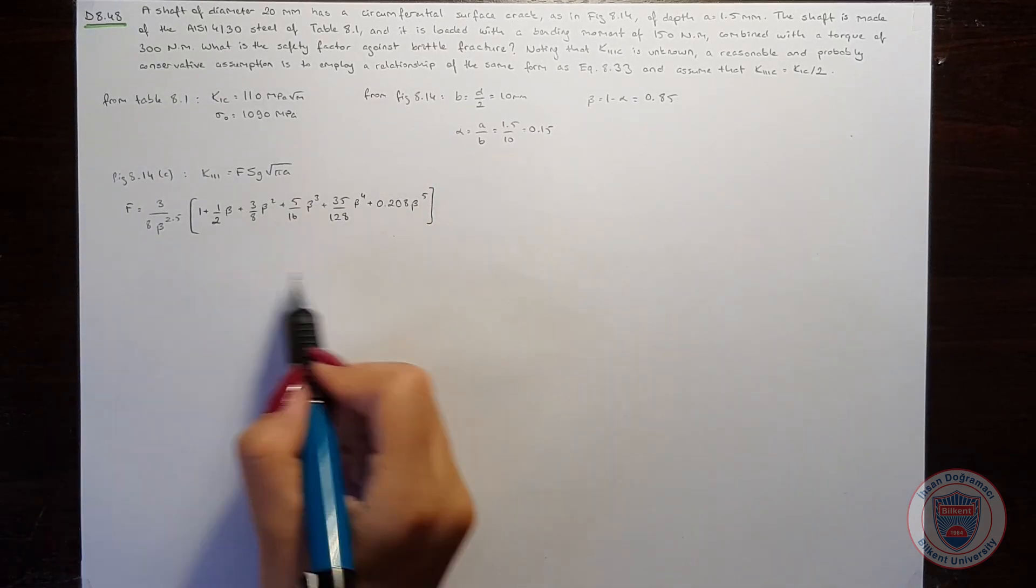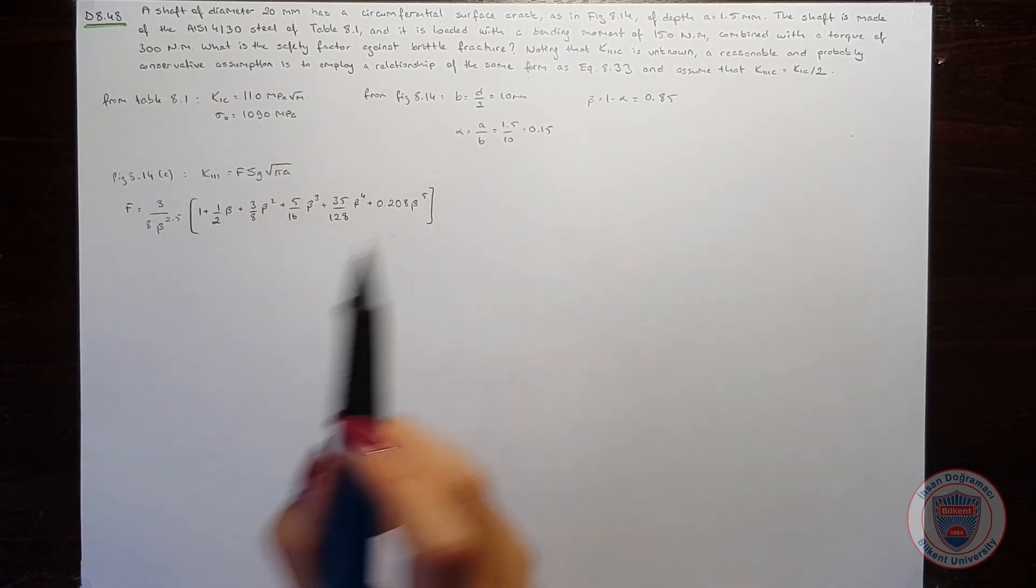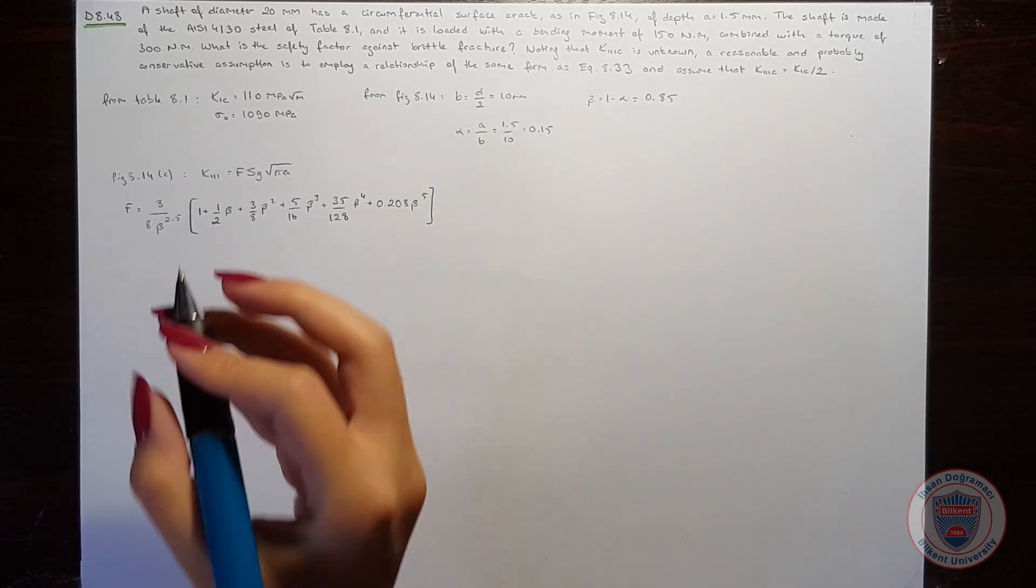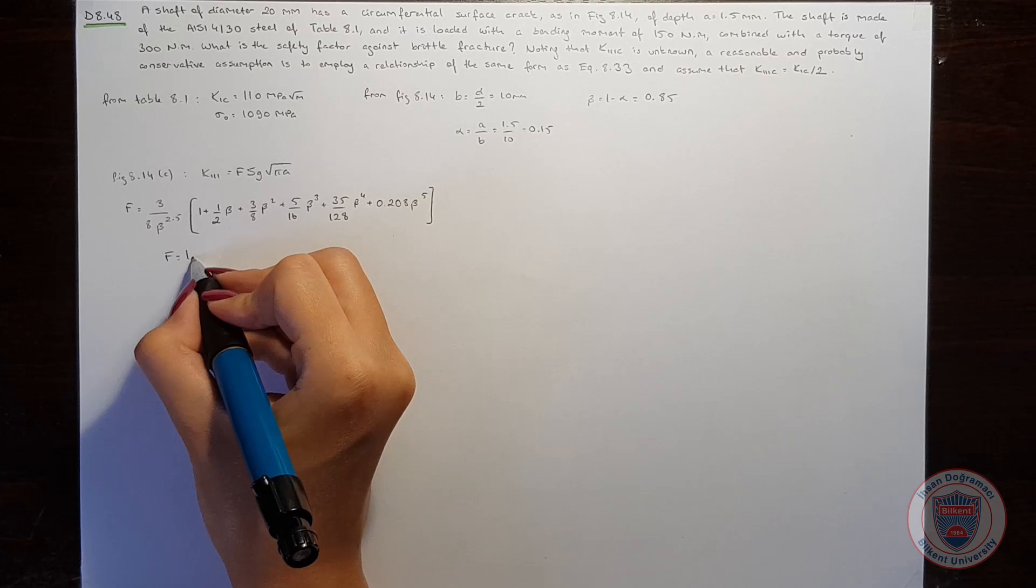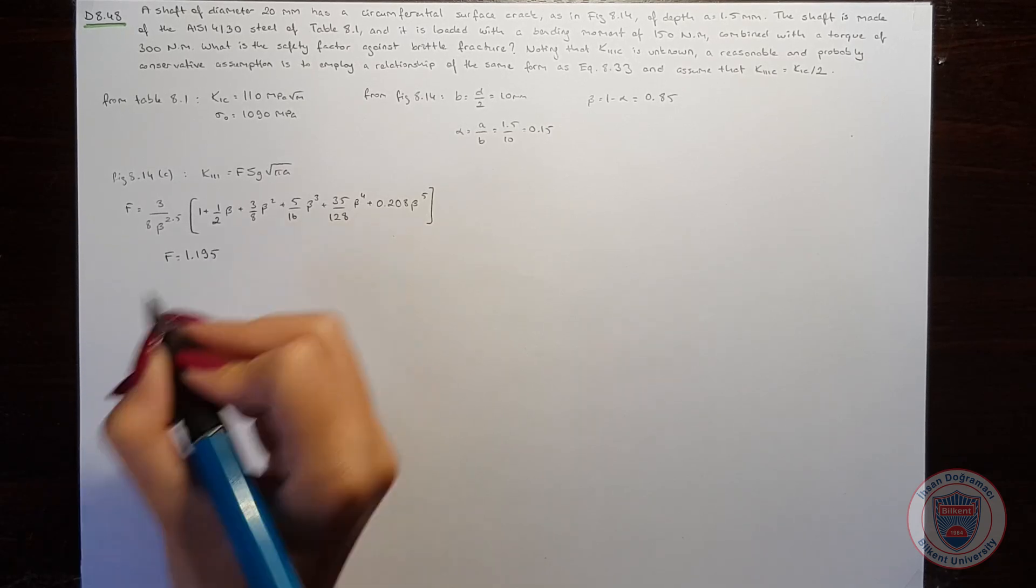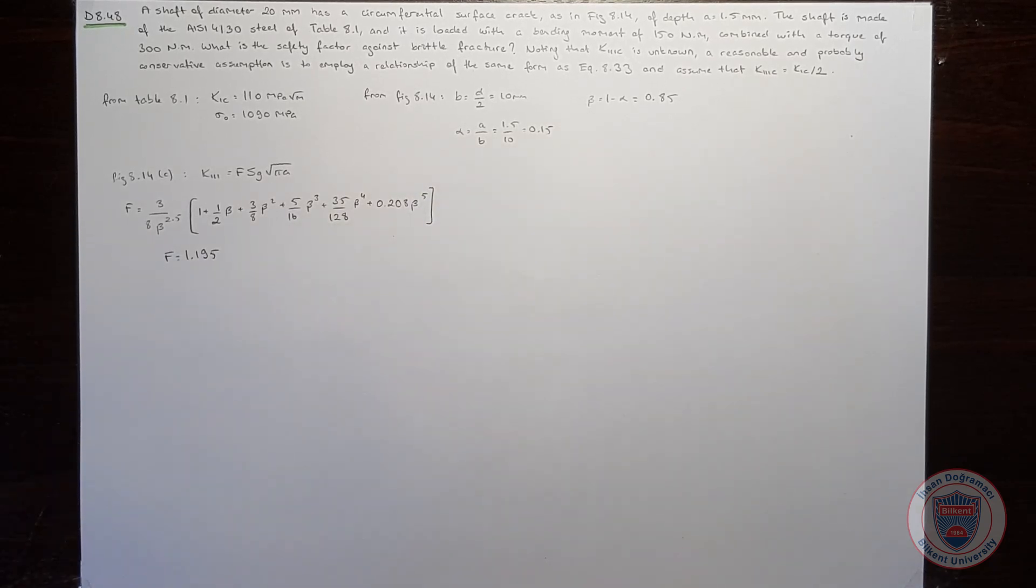When we compute this form factor for beta equals 0.85, we obtain F equals 1.195. Let's calculate Sg.